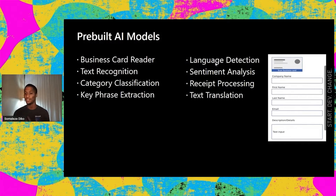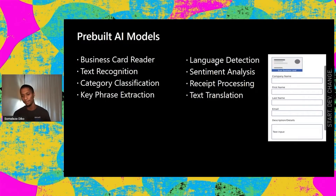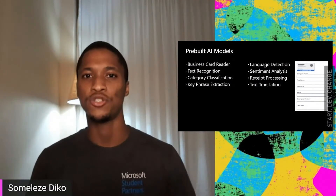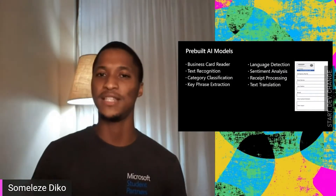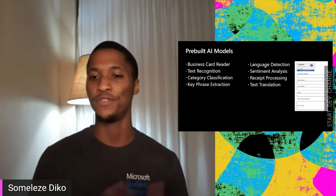We also have sentiment analysis, which is my favorite. If you have a product out there and people are giving feedback on how your product is doing, you can use sentiment analysis in AI Builder to learn whether feedback is positive or negative. You can then structure your product, make it better, or improve on certain things based on those comments. We also have receipt processing.